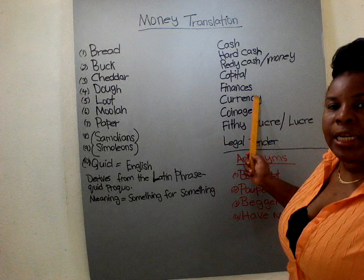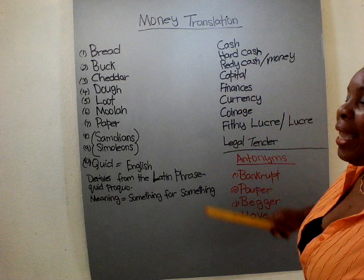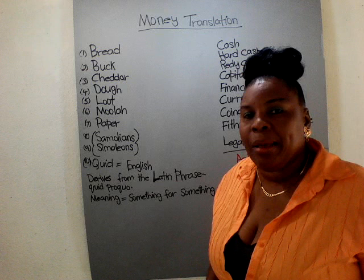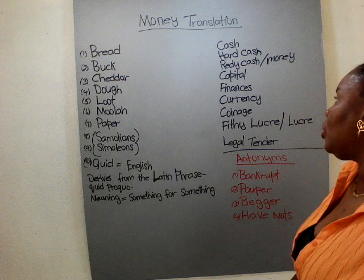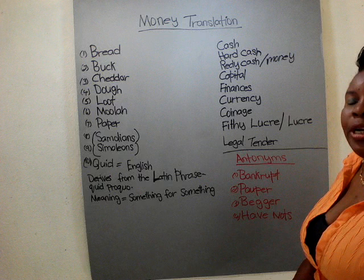Here are some professionally used words for money. Cash. Hard cash — when someone says hard cash, that means it is readily available, it's right in your hand. Ready cash — same thing for money. It's available, it's right here in your hand. Or if you're going for a job, they're going to pay you ready cash — you're not going to get a check or they're not going to deposit it into your account.